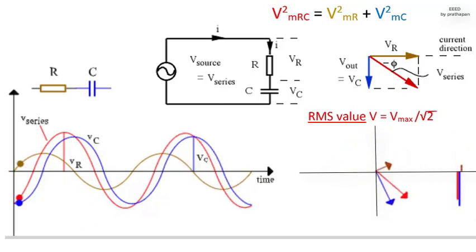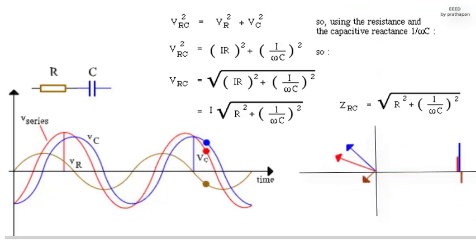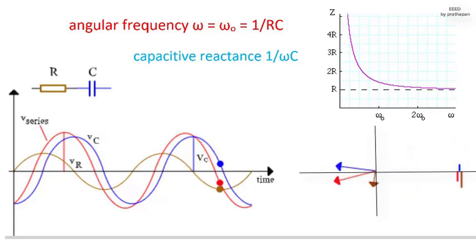Note the frequency dependence of the series impedance ZRC. At low frequencies, the impedance is very large because the capacitive reactance 1 slash Omega C is large. The capacitor is open circuit for DC. At high frequencies, the capacitive reactance goes to 0. The capacitor doesn't have time to charge up, so the series impedance goes to R. At the angular frequency Omega equals Omega O equals 1 slash RC, the capacitive reactance 1 slash Omega C equals the resistance R.